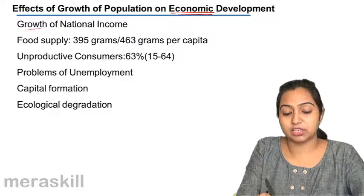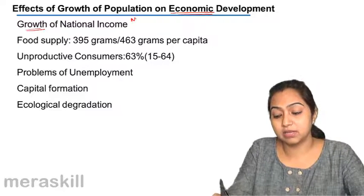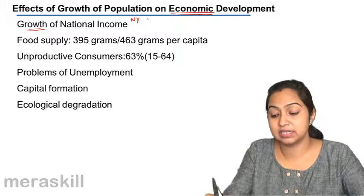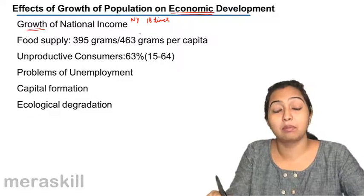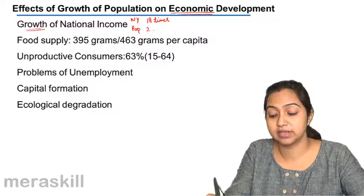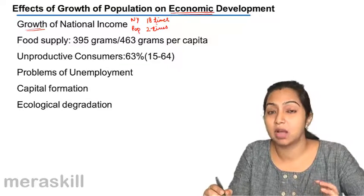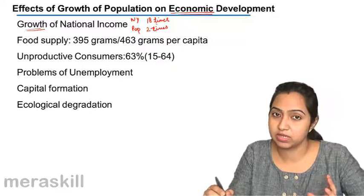Now, growth of national income. National income has increased tremendously over the years — it has increased by nearly 18 times. But at the same time, population has also increased at around 2 times. So the impact has not come down as well as was expected.